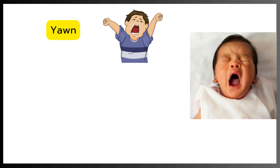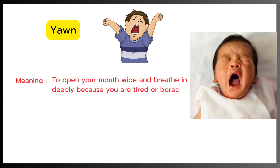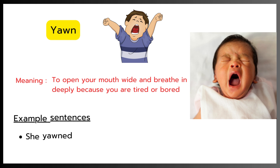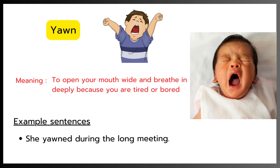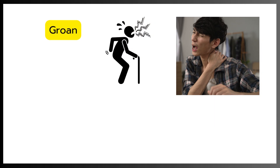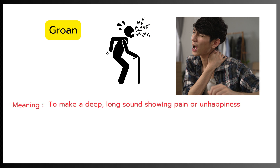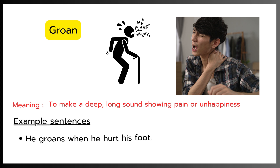Yawn. Meaning: To open your mouth wide and breathe in deeply because you are tired or bored. Example: She yawned during the long meeting. Groan. Meaning: To make a deep, long sound showing pain or unhappiness. Example: He groans when he hurt his foot.